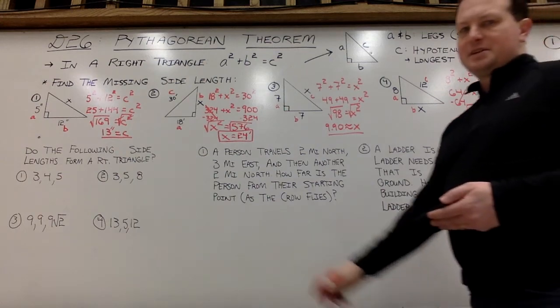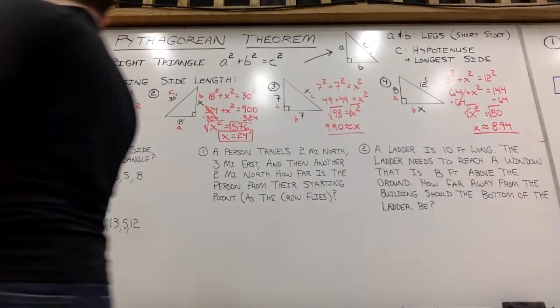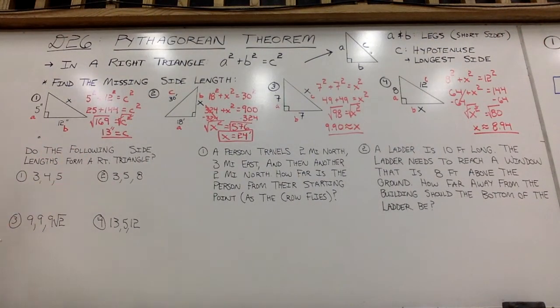The next set of examples here are checking whether or not the given side lengths form a right triangle. So you're just going to check, does A squared plus B squared equal C squared? So does 3 squared plus 4 squared equal 5 squared? Does 9 plus 16 equal 25? Yes, it does. 9 and 16 does equal 25.